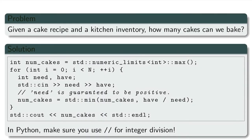In the program Cakes, you are given a cake recipe in the form of a list of n positive integers representing amounts for n ingredients. You are also given a kitchen inventory in the same format. We need to compute the maximum number of cakes that we can bake for our friends.